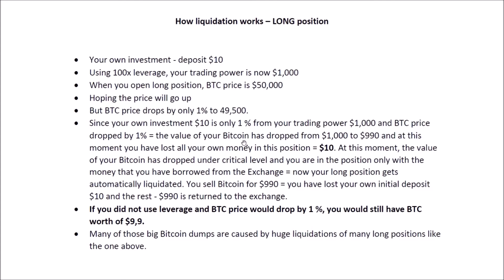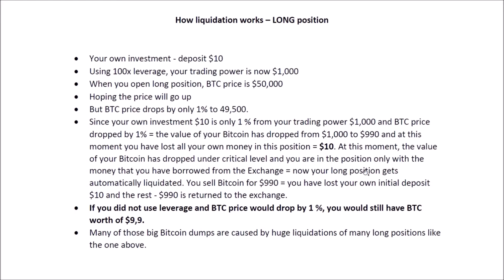Since your own investment in this trade is only $10 — which is one percent of your trading power of $1,000 — and Bitcoin dropped by one percent, the value of your position drops from $1,000 to $990. At this moment you have lost all your own money, which was only $10. Your long position gets automatically liquidated: you automatically sell Bitcoin for $990, your $10 initial deposit is lost, the $990 is returned to the exchange, and you are left with nothing — 100% of your capital is gone.